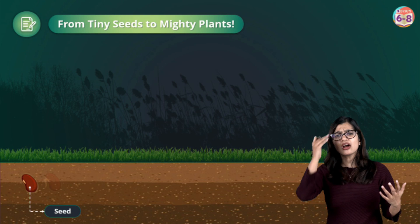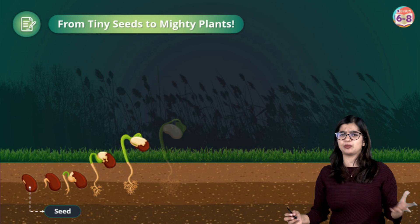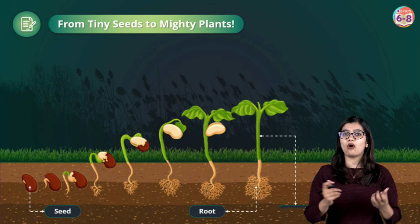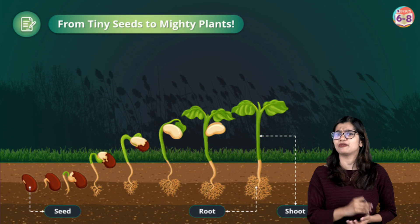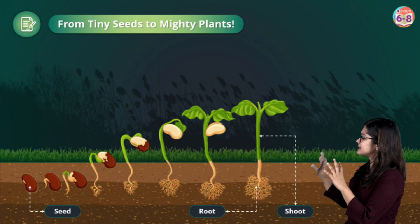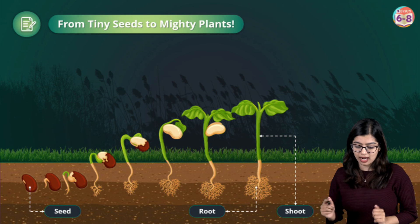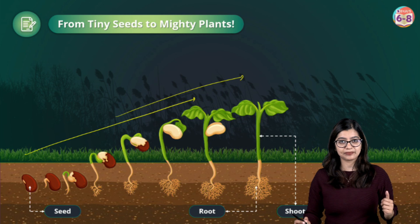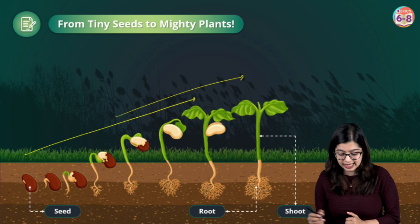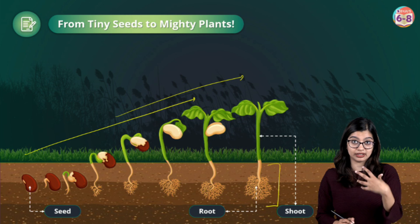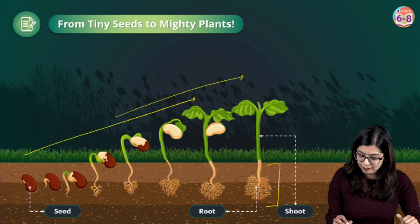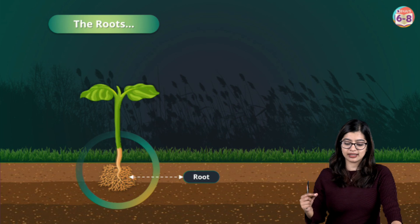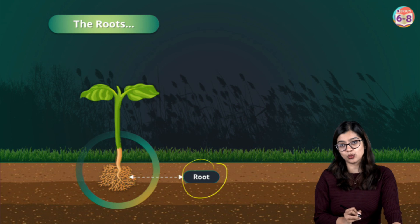Most plants — especially flowering plants — start their life with the help of a seed. We sow a seed under the ground and this seed will germinate and grow into a new plant. There are parts present underneath like the roots, and parts present above. Let's get started with the first part, which is the root.